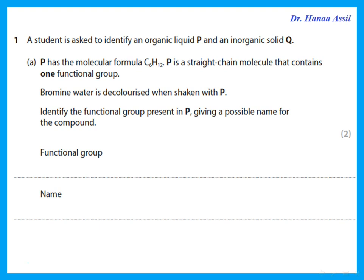The question says a student is asked to identify an organic liquid P and an inorganic solid Q. P has molecular formula C6H12. P is a straight chain molecule that contains one functional group. Bromine water is decolorized when shaken with P. So identify the functional group — what kind of functional group decolorizes bromine water? That means I have a double bond between carbon atoms, or I have an alkene.